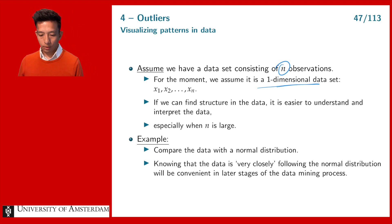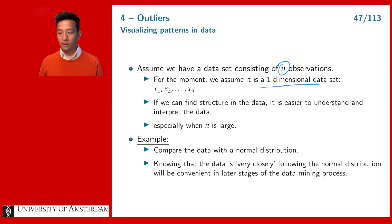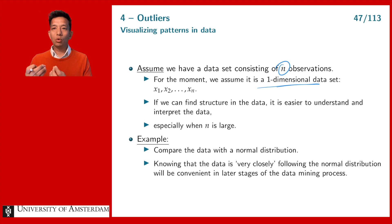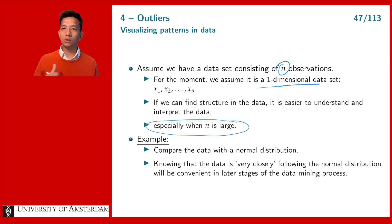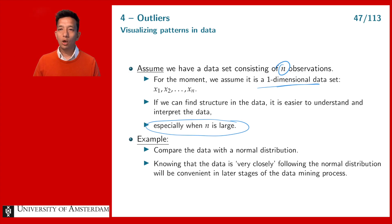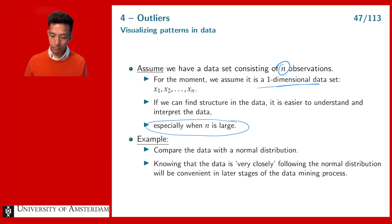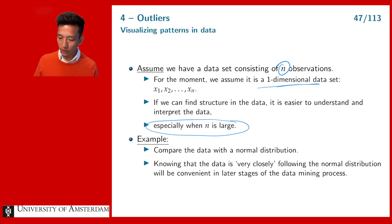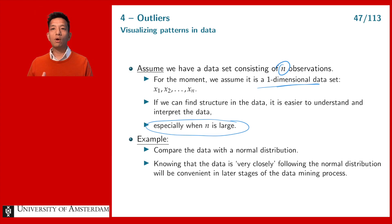Why do we need to find structure? Because if we can find structure in the data, we can summarize the data set and it's easier to understand. Especially when you have thousands or hundreds of thousands of observations, having structure in the data makes it much easier to understand what is happening. For example, assume we have a data set with one thousand observations and we find that it is very similar to a normal distribution.